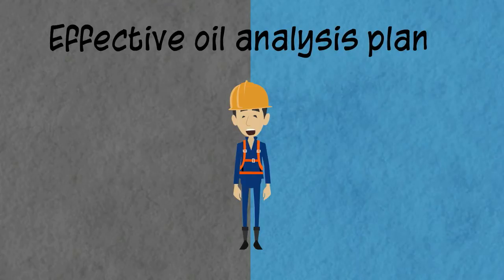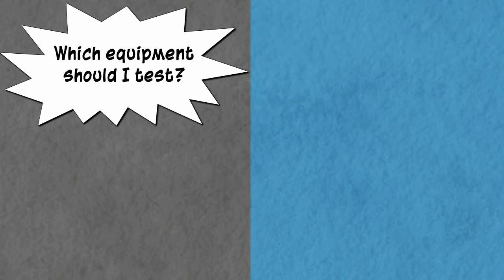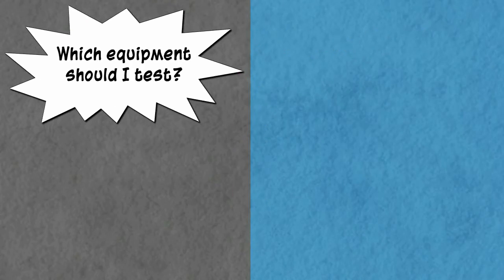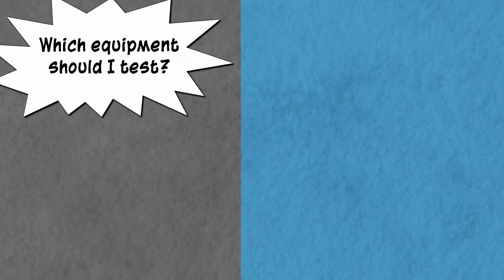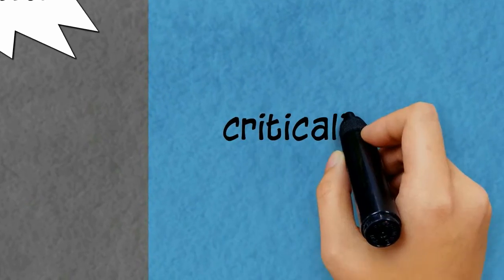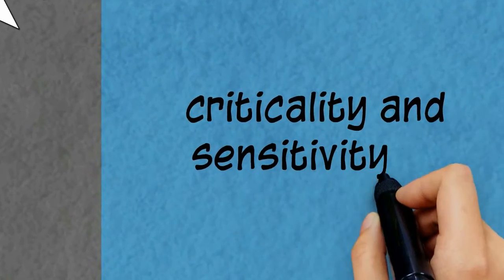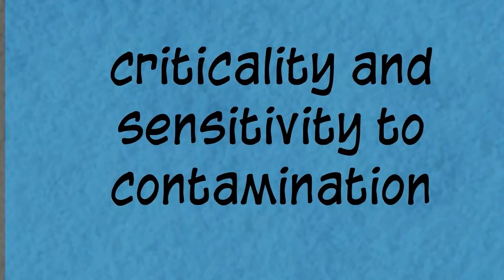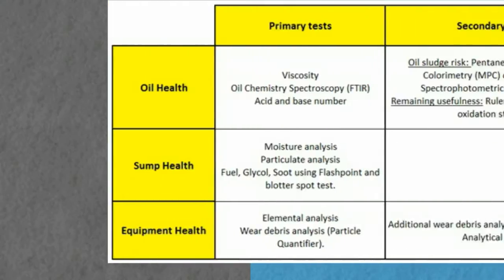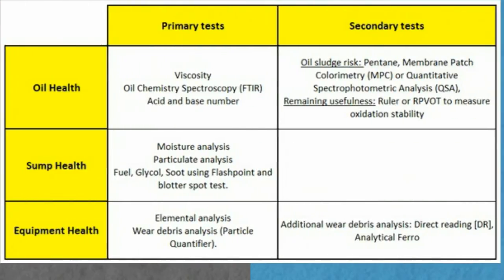First step: create a plan. An effective oil analysis plan needs to consider the following elements. First, determine the equipment that needs to be tested — this choice will mainly be impacted by equipment criticality and sensitivity to contamination. Second, define the right set of tests per equipment.